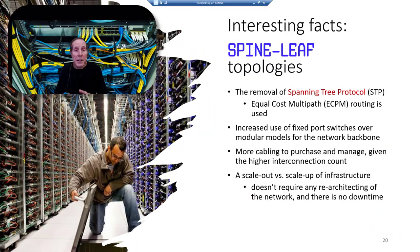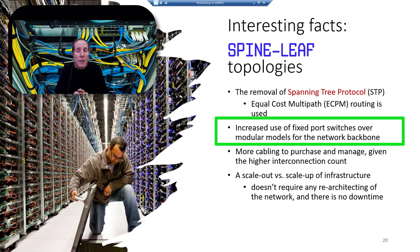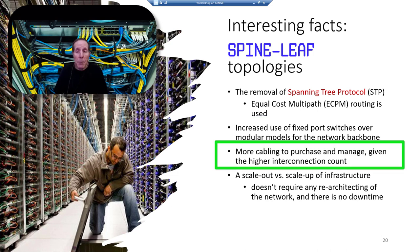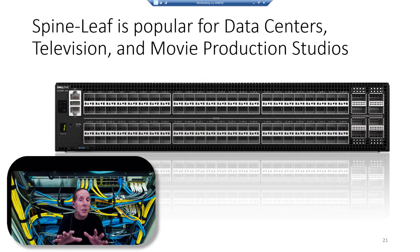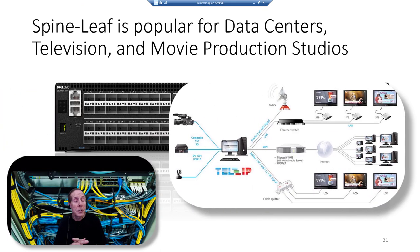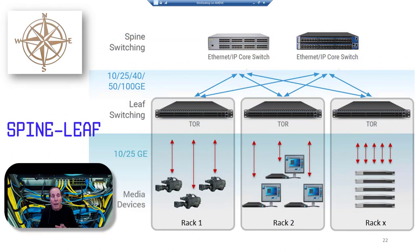A couple of interesting facts about spine-leaf topology: it removes the need for spanning tree protocol, using instead equal cost multi-path routing. It also increases use of fixed port switches on the network backbone, with more cabling to purchase and manage due to higher interconnection count. It's a scale-out versus scale-up infrastructure and doesn't require re-architecting the network — there's really no downtime to scale out. It also works great for TV production studios and movie production studios, not just cloud application data centers.